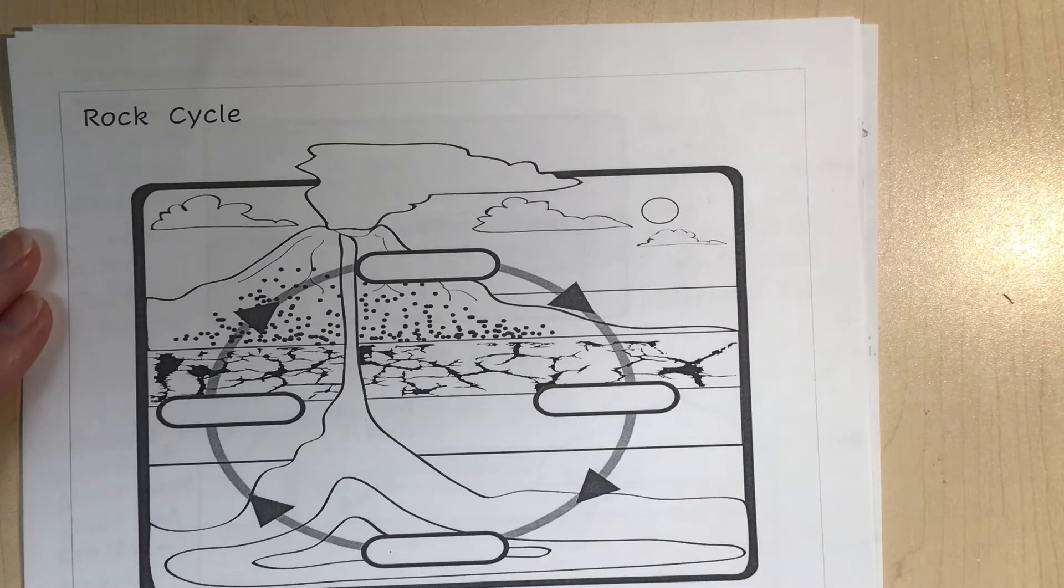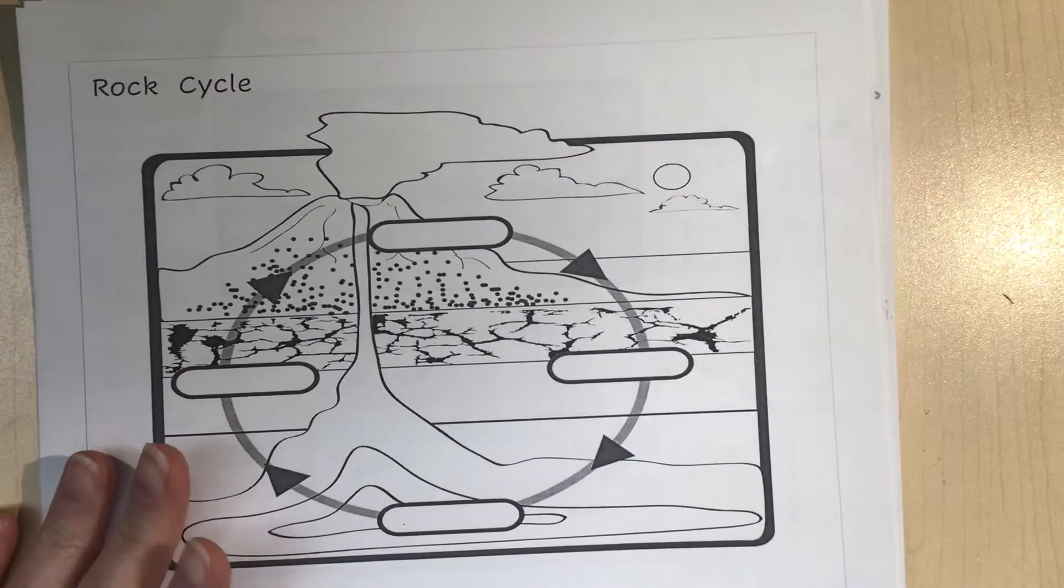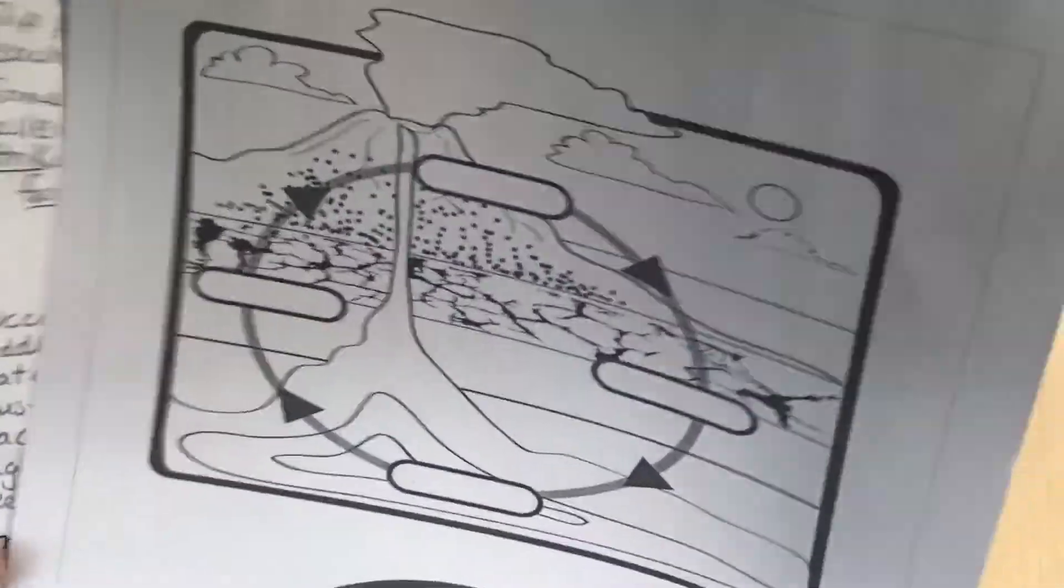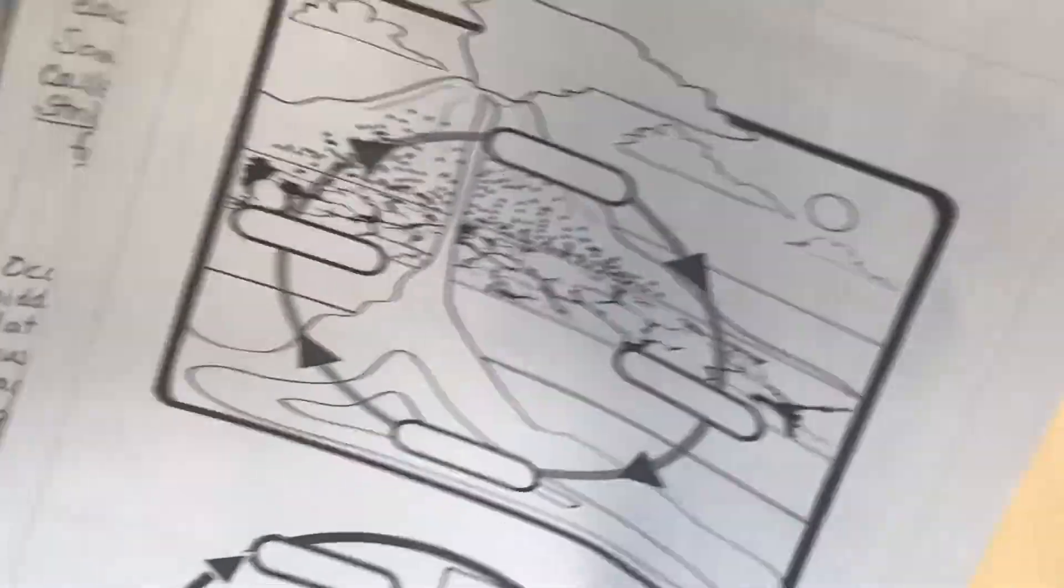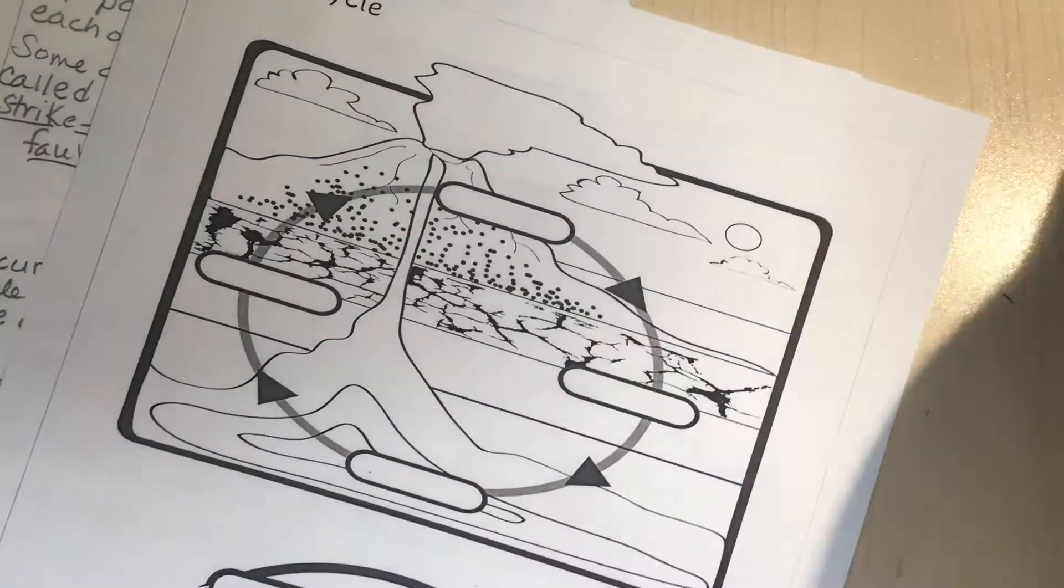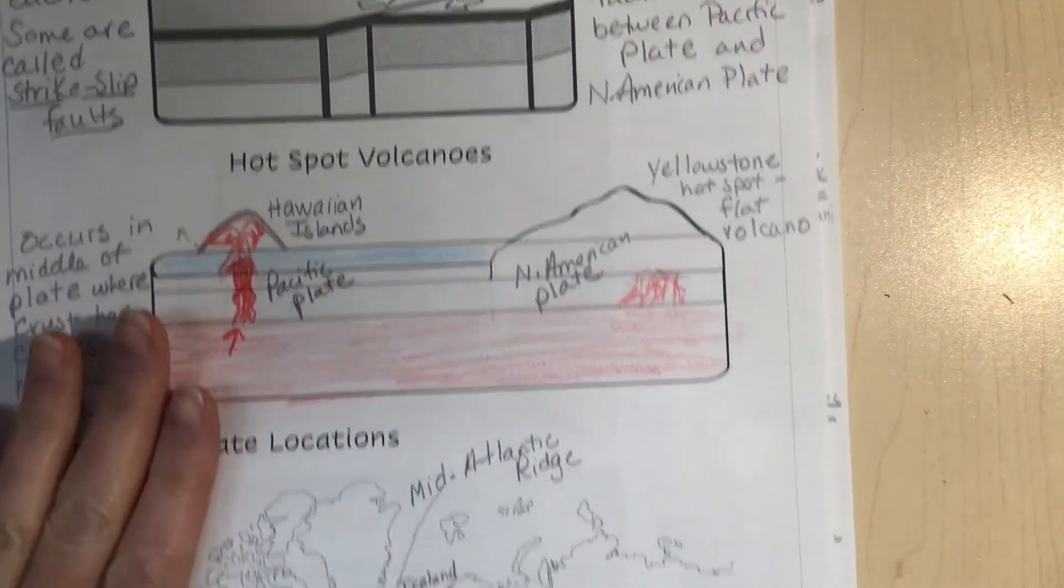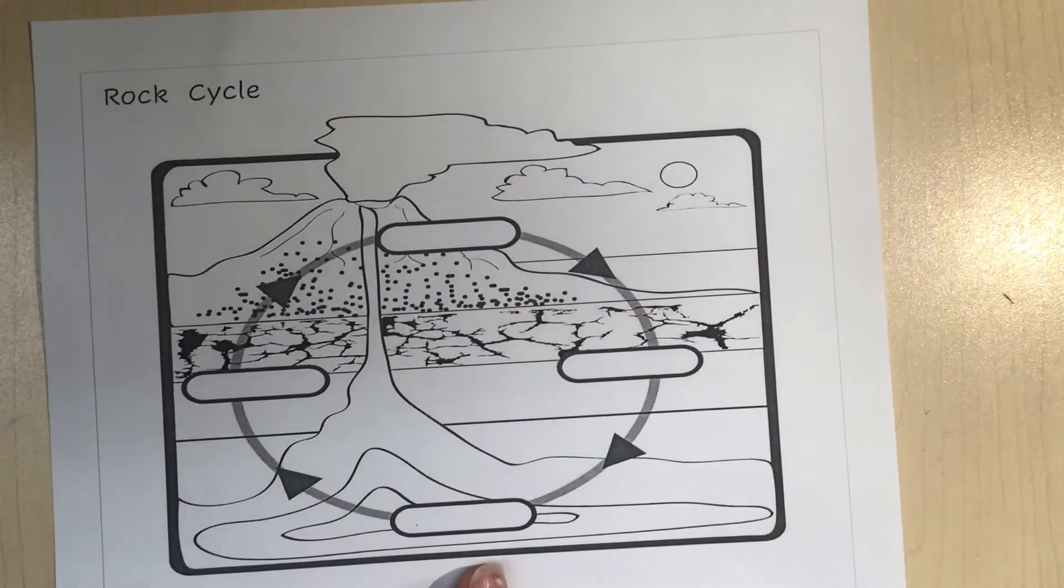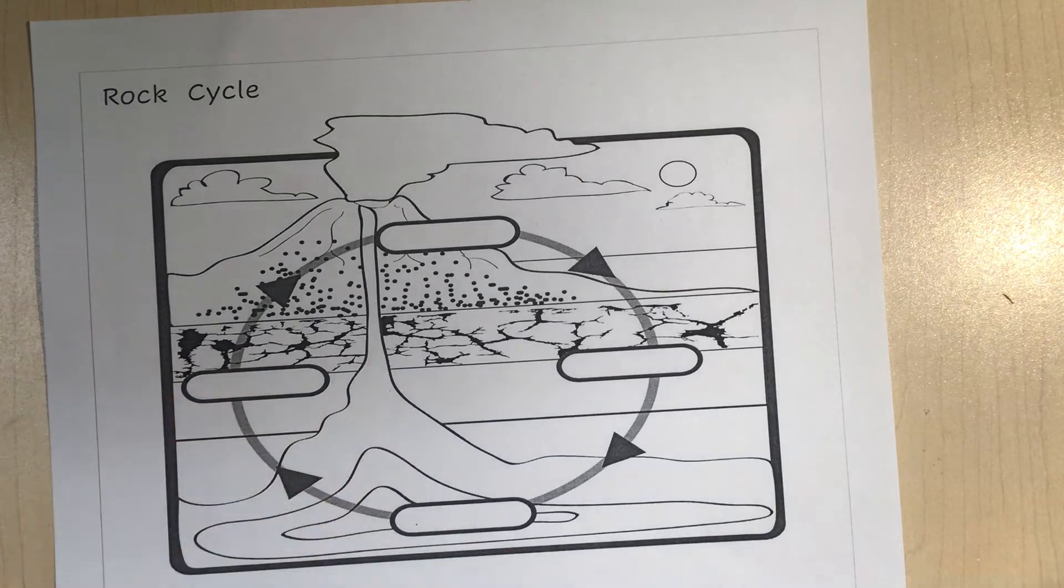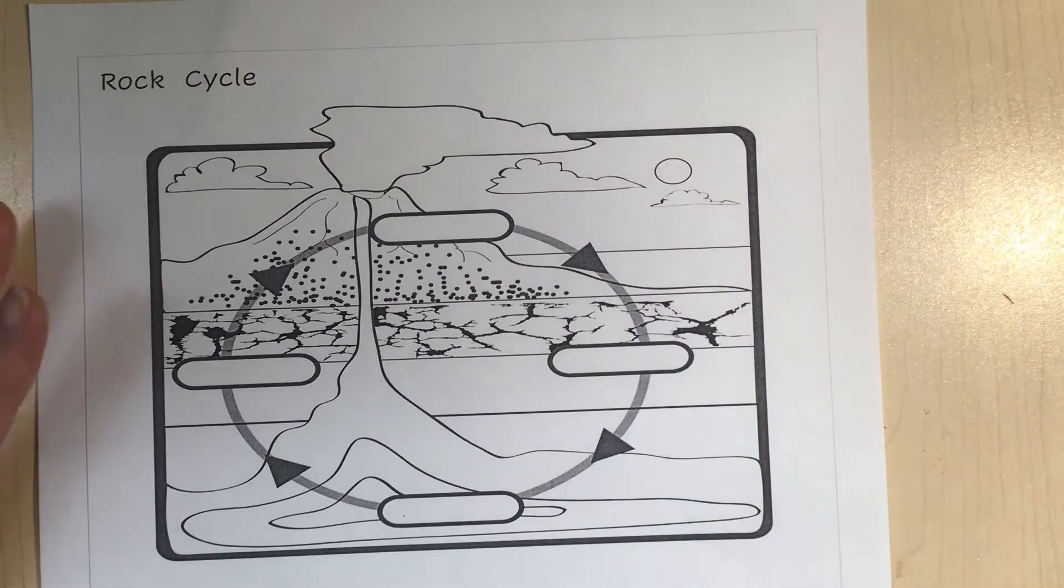Continuing on with our geology notes, this is page four of four, so it's the last page. We started with the first page on geology notes, then we did the plate boundaries, then more plate boundaries and hotspot volcanoes, and now we're on the rock cycle.